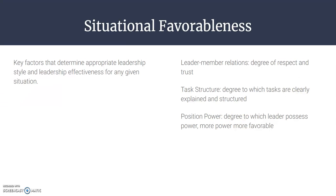Situational favorableness involves three factors: leader-member relations — what is the level of respect and trust? Task structure — are the tasks clearly explained and well structured, or is there confusion? And positional power — does the leader have legitimate authority to reward or punish? The more power, the more favorable the situation.